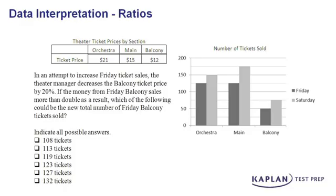Let's examine a data interpretation question together. In this problem, we're given a table with some information. We're also given a bar graph. We're going to need both to solve this question.